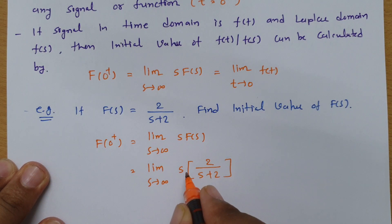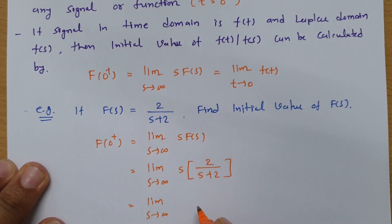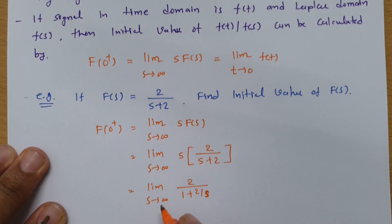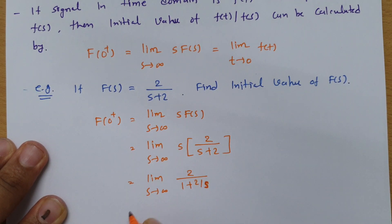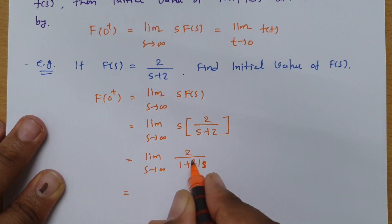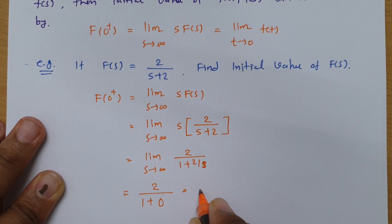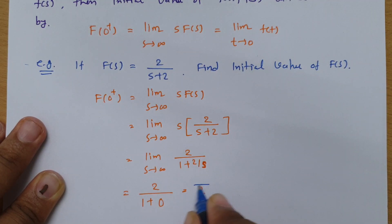Taking s common from the denominator, s cancels and we get 2 divided by (1 + 2/s). Substituting s tends to infinity, 2/s becomes 0, giving us 2 divided by (1 + 0), which equals 2. So the initial value of the given function is 2.